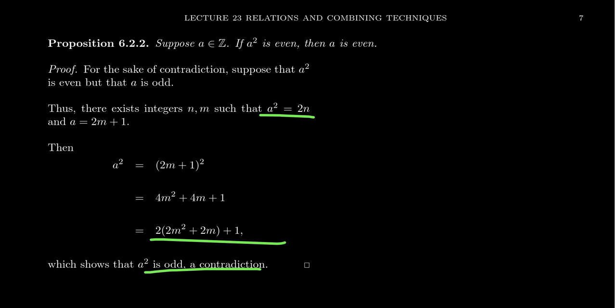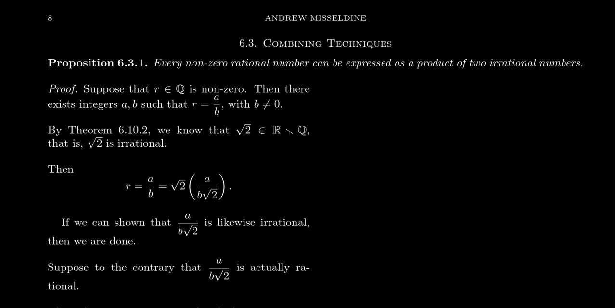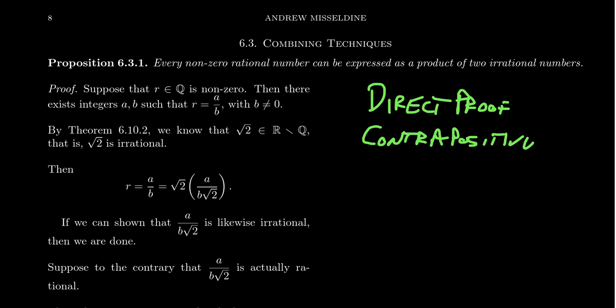While this proof is valid, one could argue it's a bit more awkward than it needed to be. Proof by contrapositive might actually be more straightforward here. In the next video — the last video for lecture 23 — I'll discuss how to decide between direct proof, proof by contradiction, and proof by contrapositive, including their strengths and weaknesses.